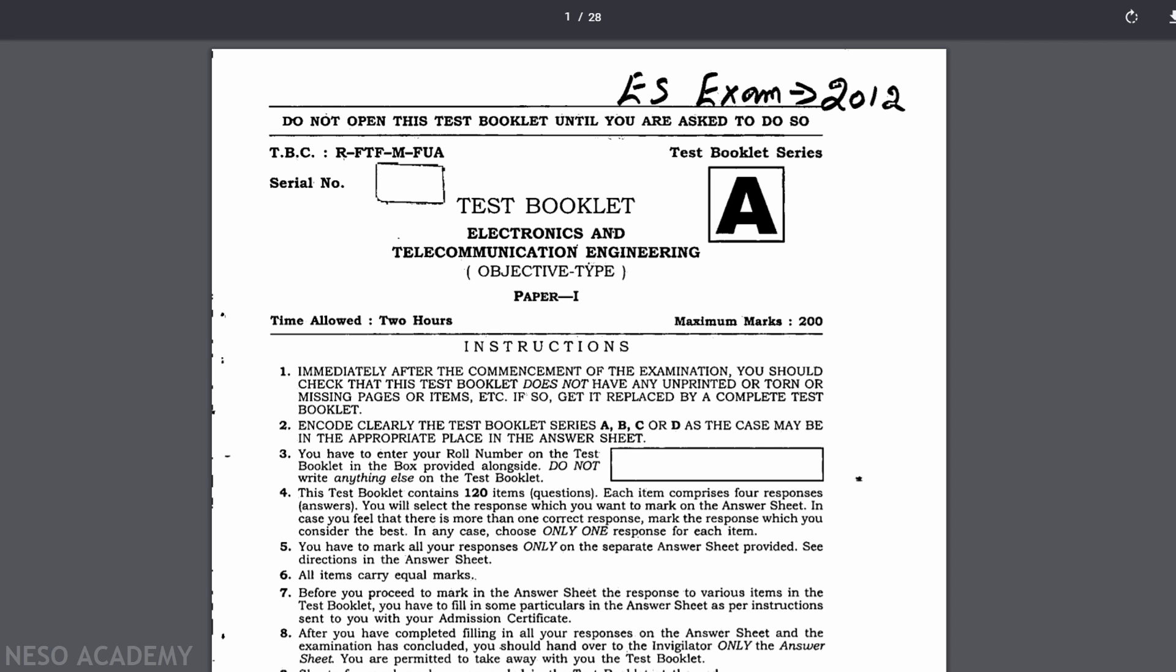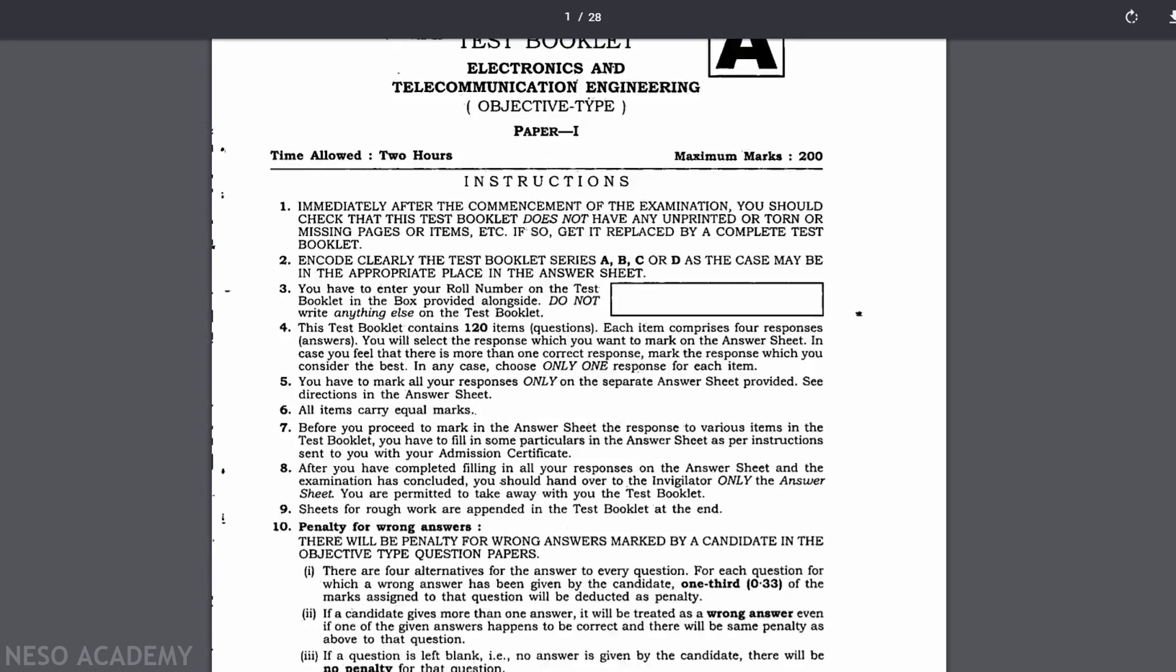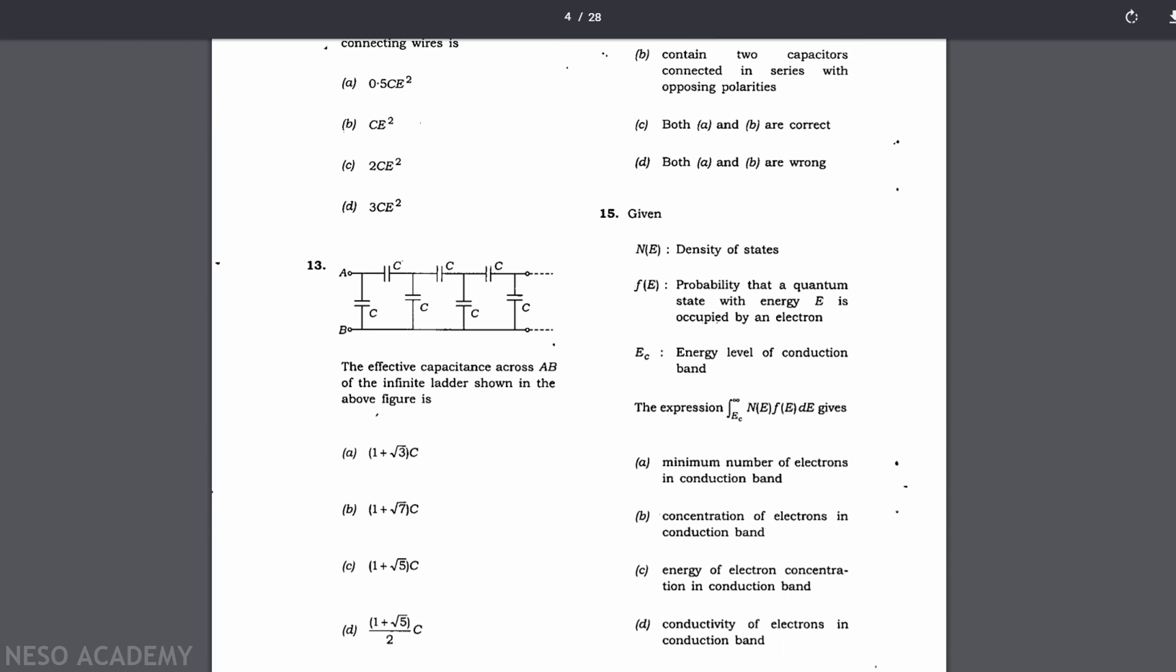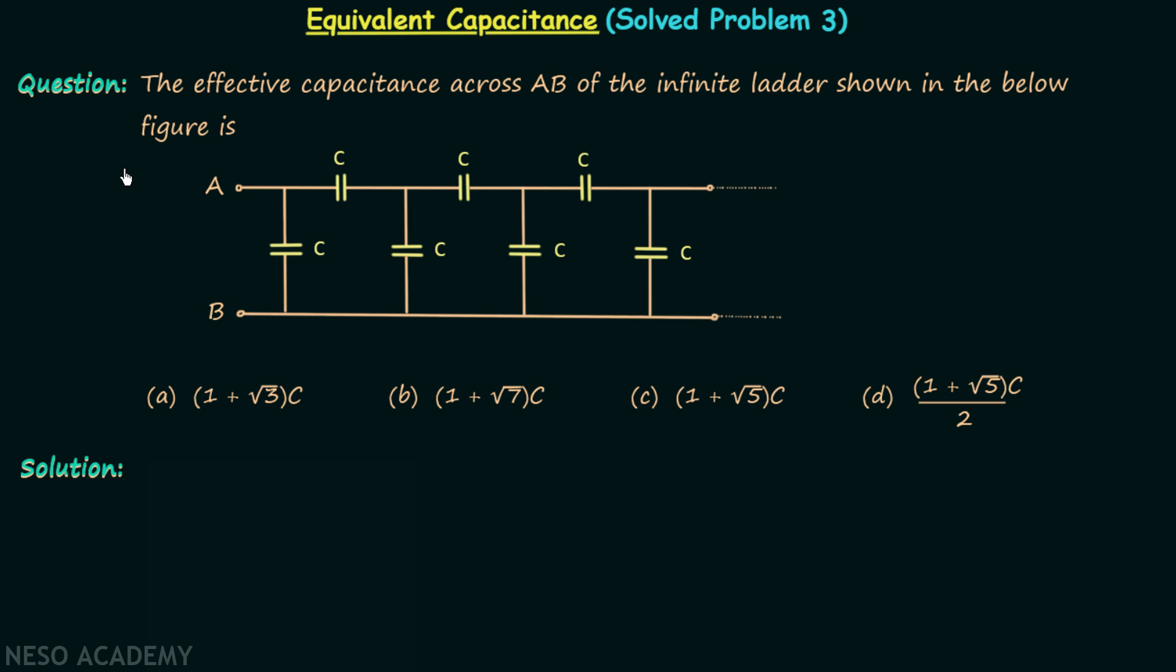On your screen you are looking at ESC 2012 objective paper 1 of electronics and telecommunication engineering. In this paper, question number 13 is based on infinite ladder network of capacitors and in this lecture we are going to solve this particular problem. According to the problem, we are required to calculate the effective capacitance.